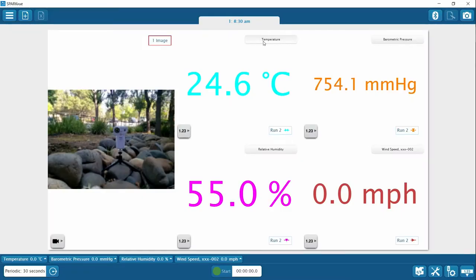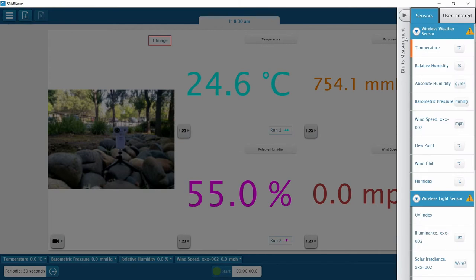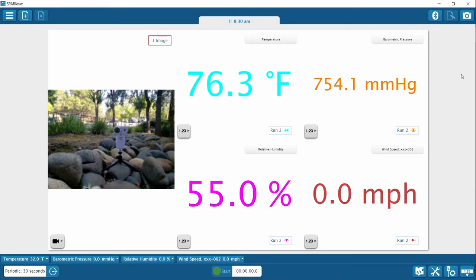It'll be different for you, possibly, depending on where you place your sensor. Just keep that in mind when you're collecting data. If you want to change from Celsius to Fahrenheit, a lot of times we need to record both. You're going to click on the temperature, and then go over here and change it from Celsius to Fahrenheit. So you have that option. All right, so that's the 8:30 data.